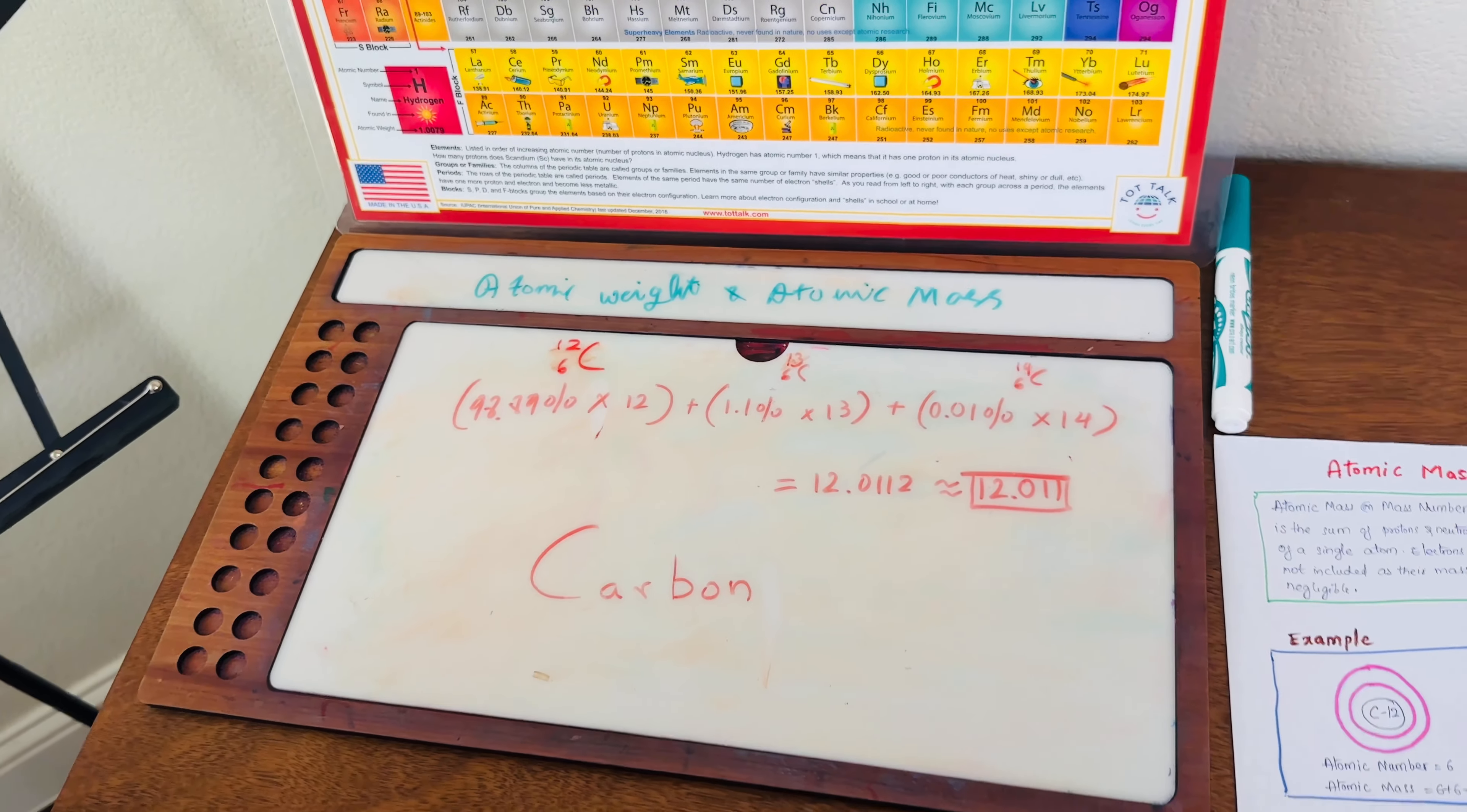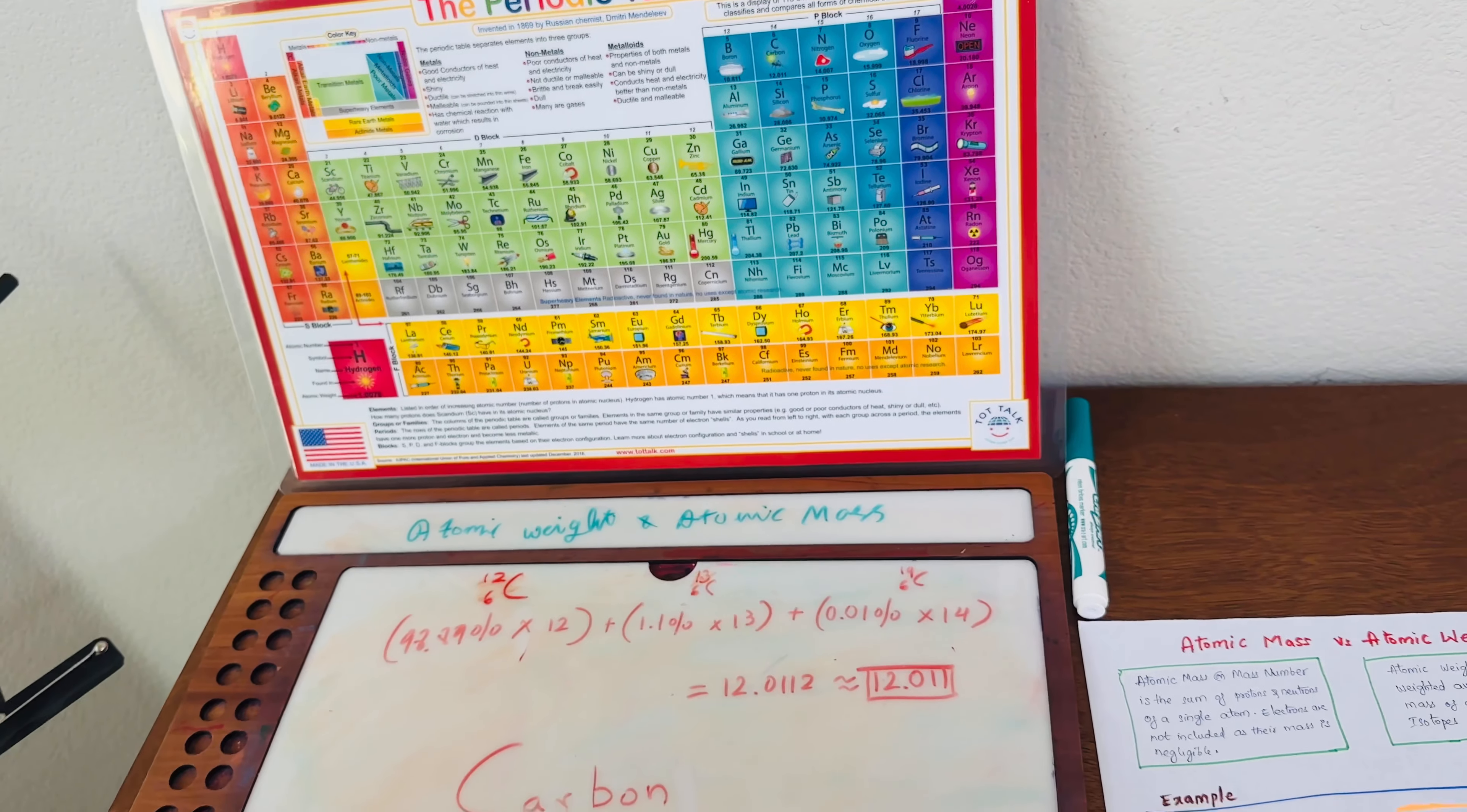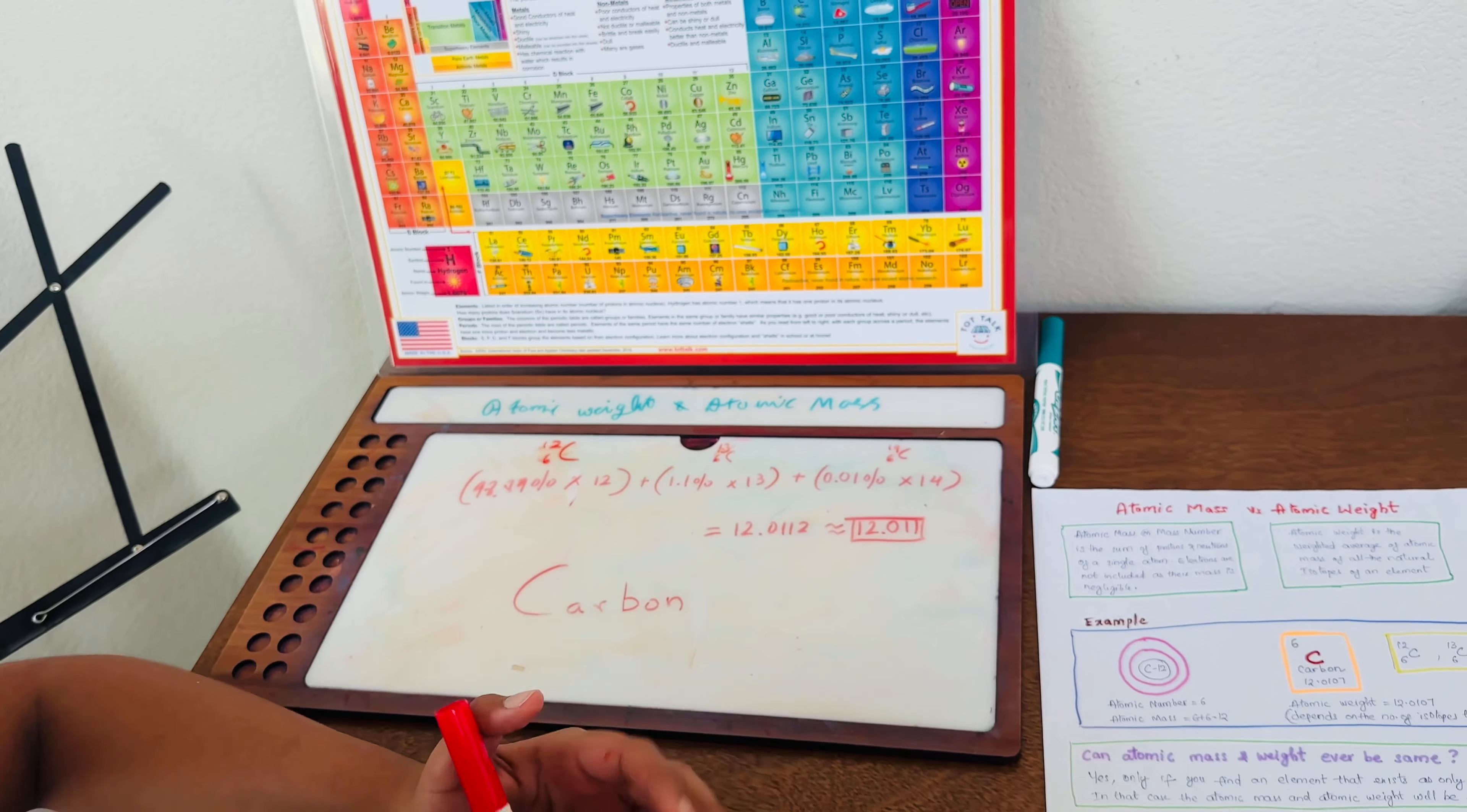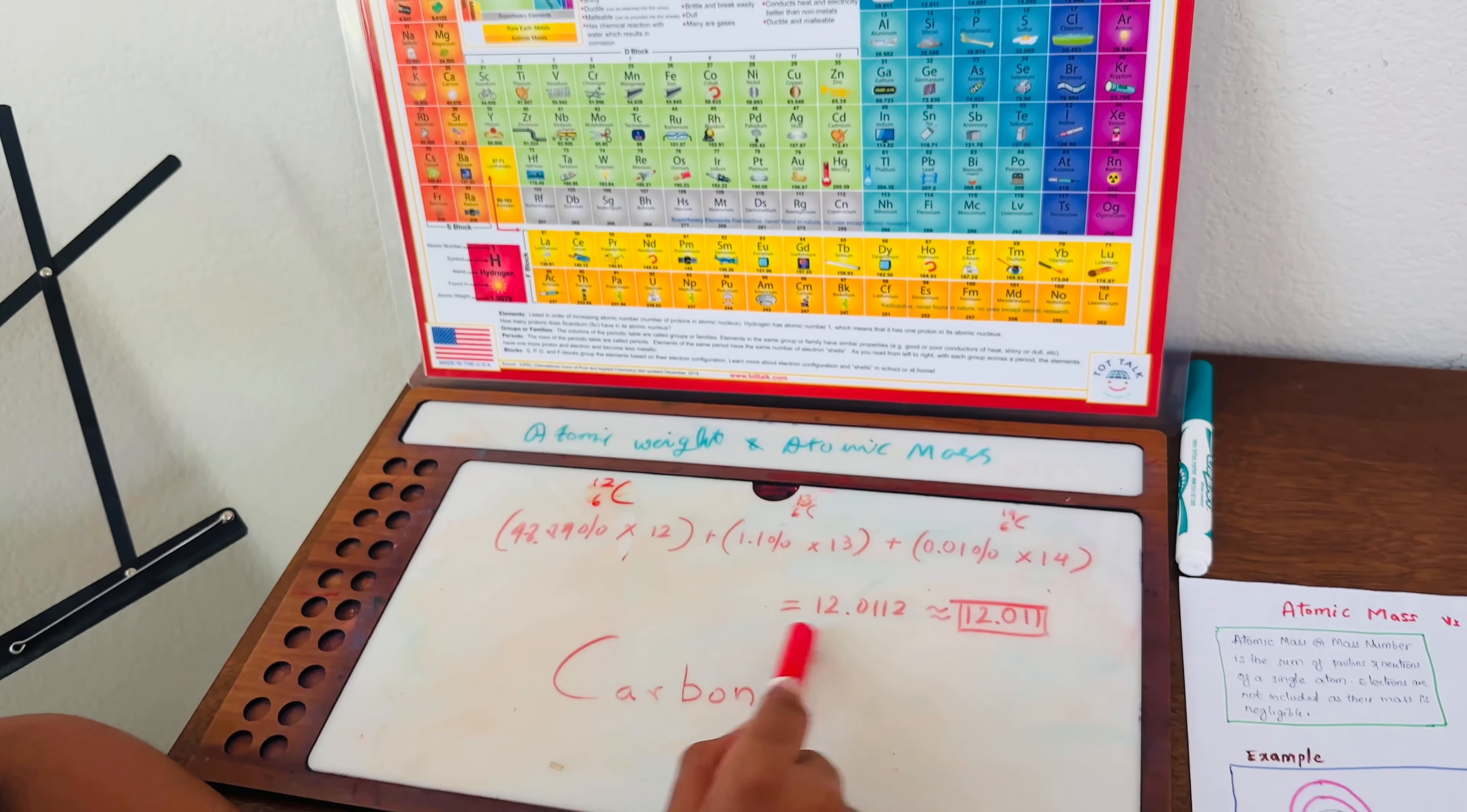The atomic mass is the sum of the protons and neutrons based on the isotope given. And atomic weight is the reoccurrence of the isotope times the mass that would give you the weight. In this case, carbon has three isotopes, so we would add it three different times, get three different answers, and add them together to get our weight.